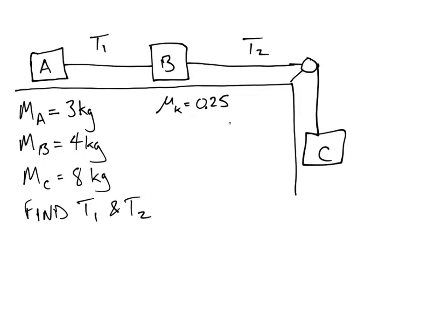Alright, this problem is considerably more complicated. We've got two masses on the table, we've got another mass hanging over the table, and we're asked to find both T1 and T2. Why? Because there's two different ropes now, and each one of these ropes has a separate tension.